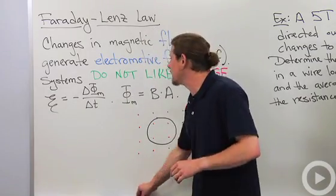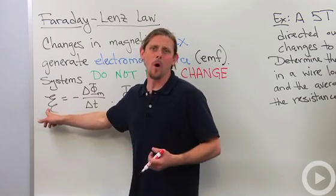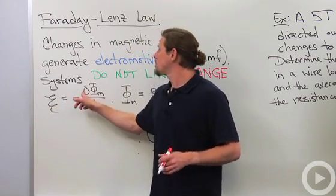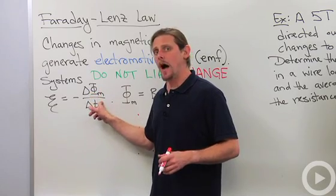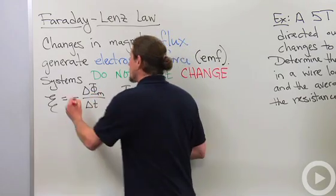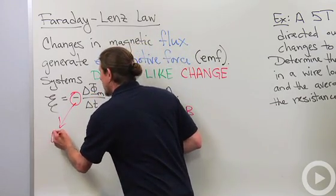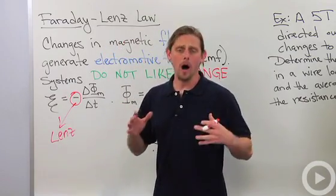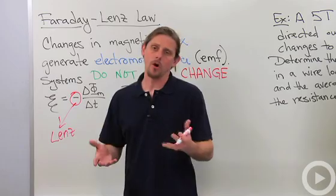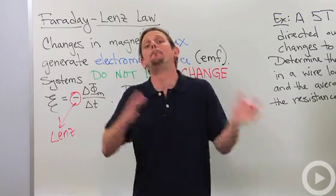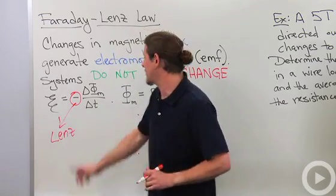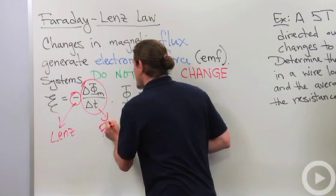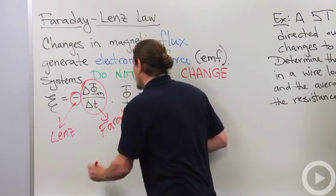The way that it looks mathematically is EMF, EMF always looks like an electrified E, equals minus change in magnetic flux divided by change in time. This minus sign is Lenz's law. Lenz said that the electromotive force will oppose the change in magnetic flux. So he gave the minus sign. This is Faraday. So Faraday Lenz.